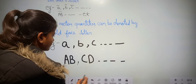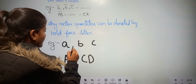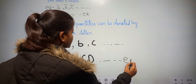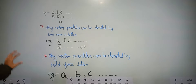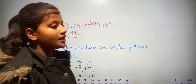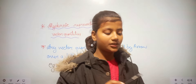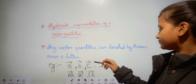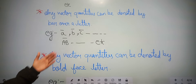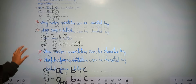So, a vector quantity can be denoted by an arrow over a letter, a bar over a letter, and a bold-faced letter. I hope you understand the algebraic representation of a vector quantity. Any vector quantity can be denoted by arrow over a letter, bar over a letter, and bold-faced letter.